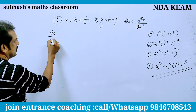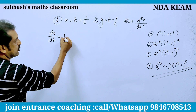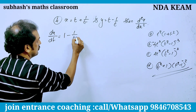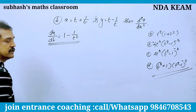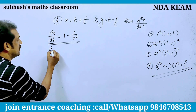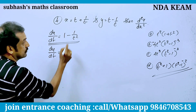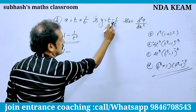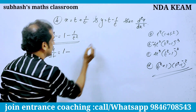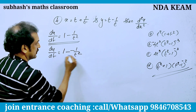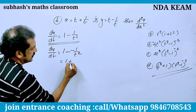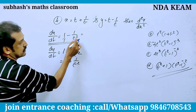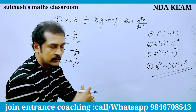dx/dt: derivative of t is 1; derivative of 1/t is −1/t². For dy/dt: again derivative of t is 1, derivative of e is −2; derivative of 1/t is −1/t², giving 2 − 1/t². Simplify: 1 + 1/t². Apply cross multiplication.